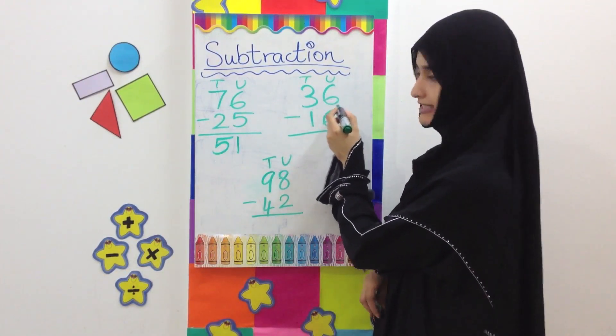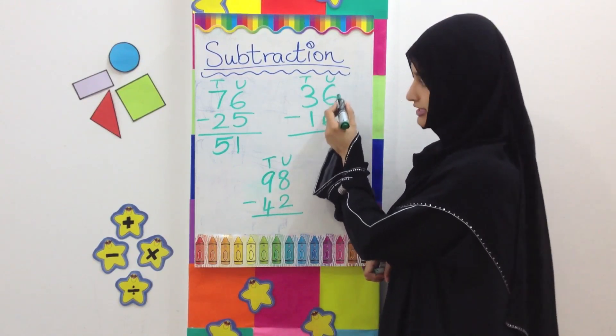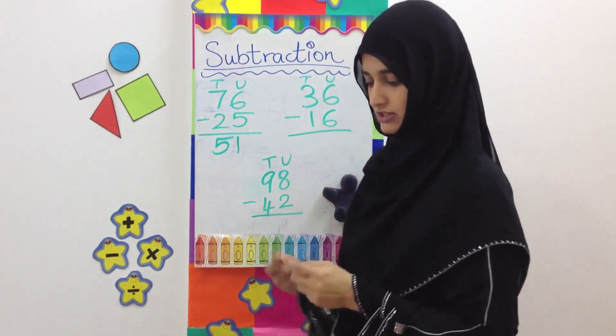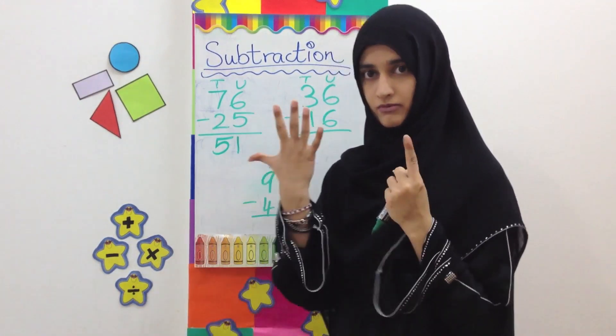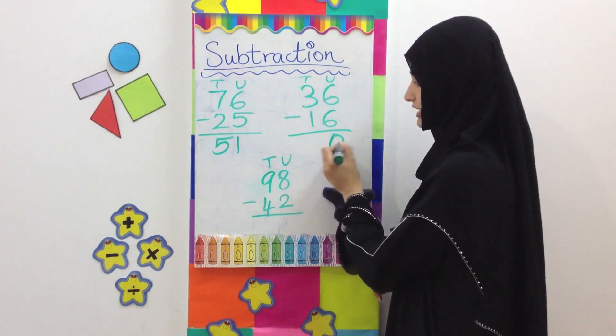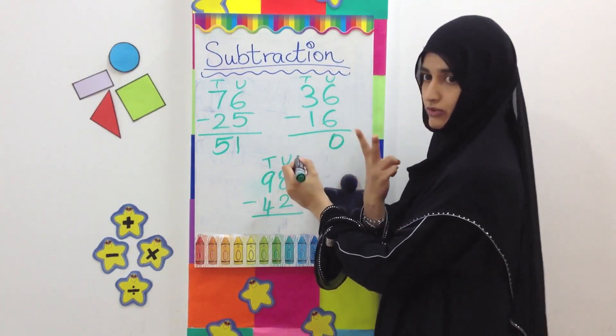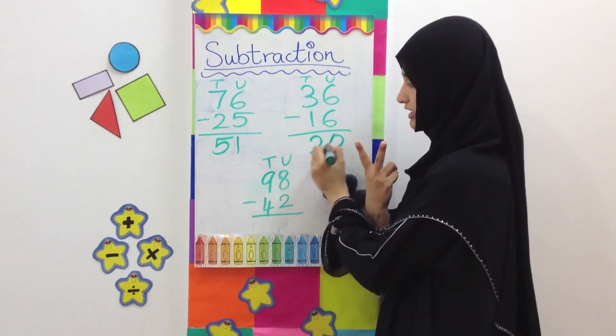Here we have 36 minus 16. We are going to take away the units. 6 minus 6, so we have 6 here, minus 6, equals 0. 0 units are left. We write it here. 3 minus 1, 3 take away 1, answer is 2. The answer is 20. 36 minus 16 equals 20.